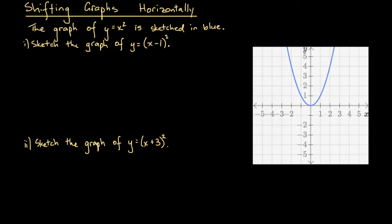We have here that the graph of y equals x squared is sketched in blue. This is the conventional graph of y equals x squared, which we should be familiar with by now. The first part asks us to sketch the graph of y equals x minus 1, all squared. In order to do that, we might take the conventional approach and draw up a table of x values and associated y values.